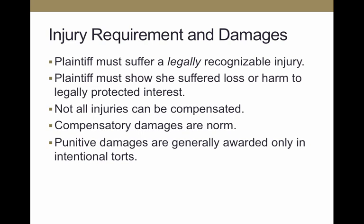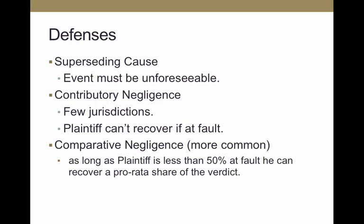Compensatory damages are the norm, and punitive damages are usually only awarded for intentional torts. Defenses include superseding cause — some unforeseeable event that actually causes the injury — and contributory and comparative negligence. Contributory negligence, which is rare, means the plaintiff won't recover if they were at fault. Comparative negligence, which is more common, compares the degree of negligence of both parties; as long as the plaintiff is less than 50% at fault, they can recover a proportionate share of the verdict, reduced by their percentage of fault.